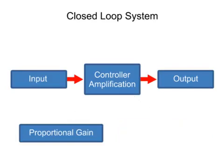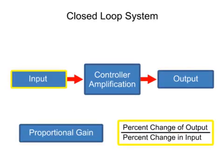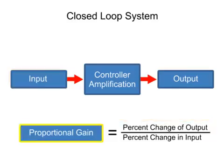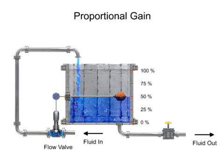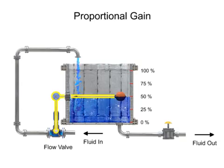The ratio of the change in output to the change in input is defined as proportional gain. To illustrate the concept of gain, a common process of regulating the level of fluid in a tank with a float attached to a control valve is used.